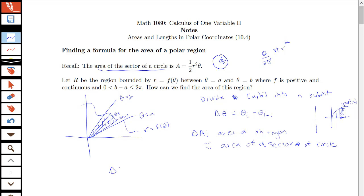So we can say that our delta A sub i here is approximately one-half our radius squared. Well, the radius is the distance from the center here to our curve, R equals f of theta.